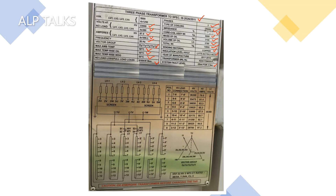Here you can see the primary side — the primary side will be LV voltage here. The secondary side has terminals 1U, 1V, 1W. This is grid connected. We have 4 number LVs here, indicated as 2U, 2V, 2W; 3U, 3V, 3W; 4U, 4V, 4W; and 5U, 5V, 5W. So we have 4 LVs: 1, 2, 3, 4.